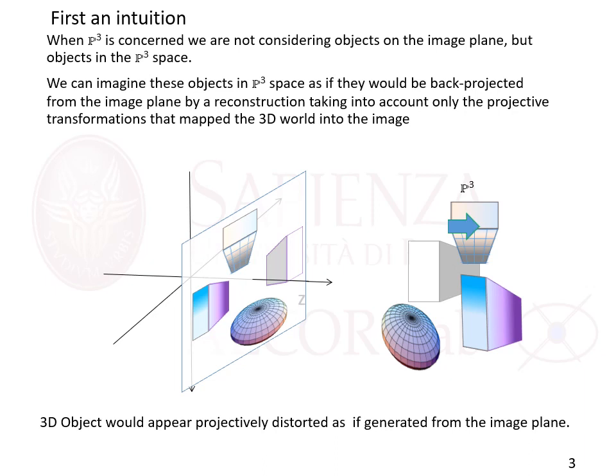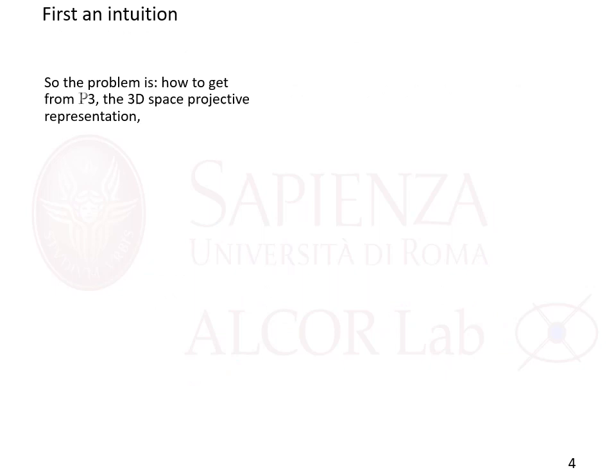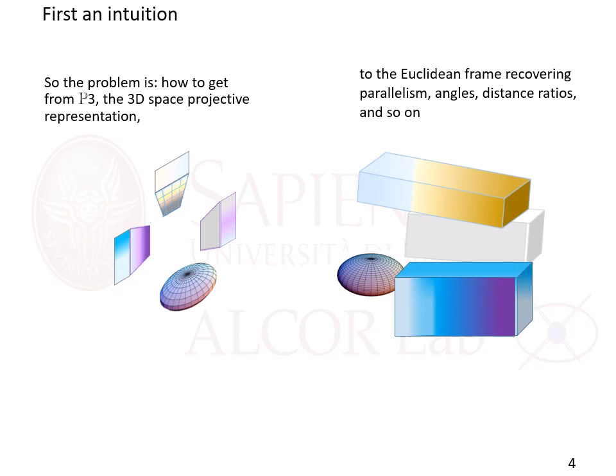So the 3D object would appear projectively distorted, as if generated from the image plane. The problem is how to get from P3, the 3D space projective representation, to the Euclidean frame, recovering parallelism, angle, distance, ratios, and so on.